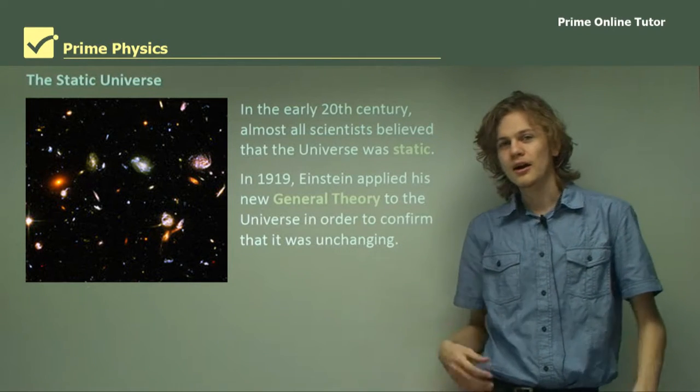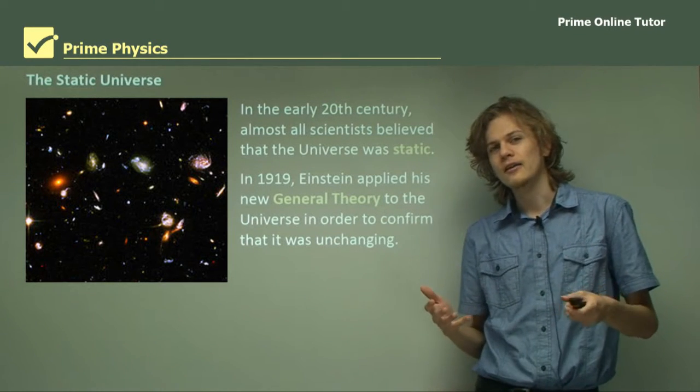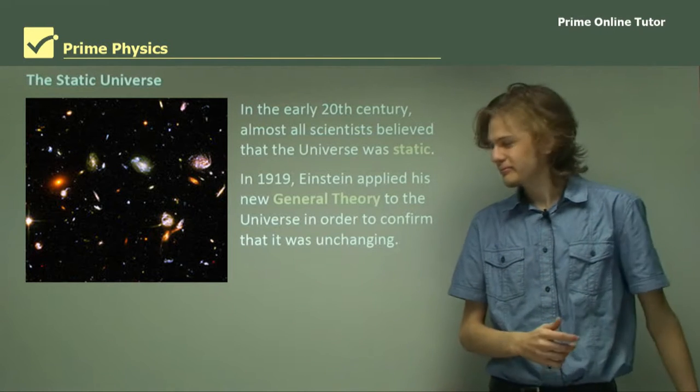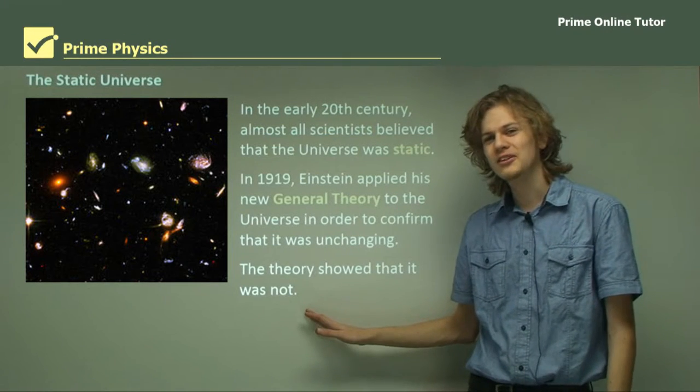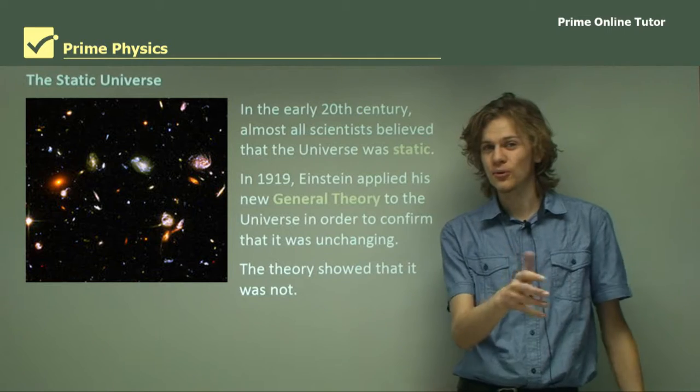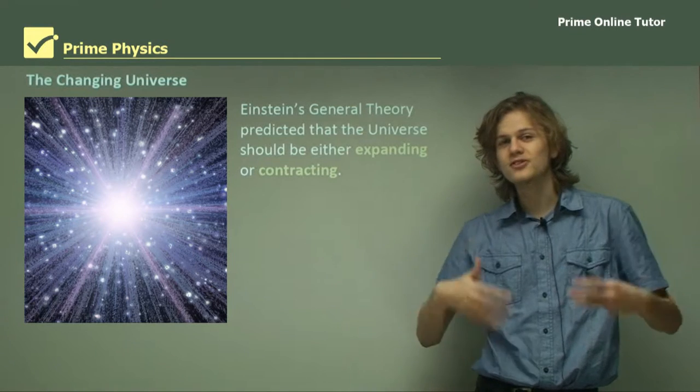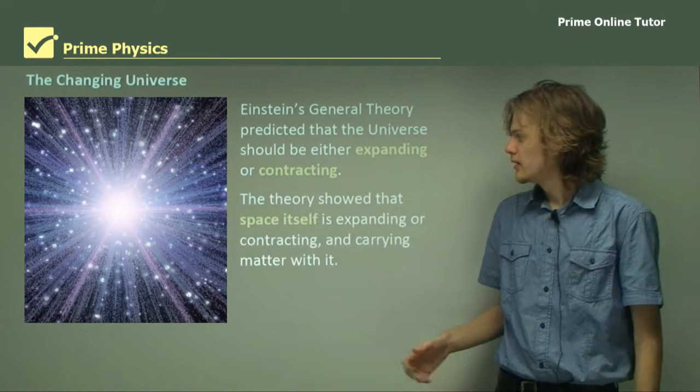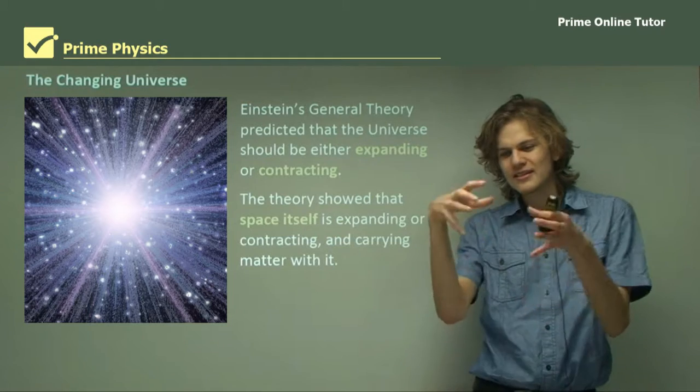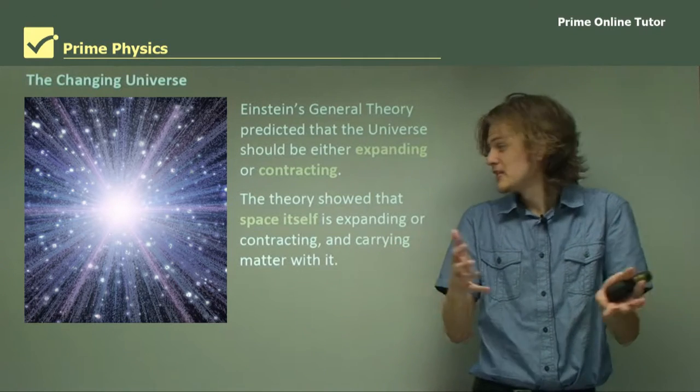In 1919, Einstein decided to prove this. He took his general theory and decided to apply it to the observable universe because he figured that his general theory of relativity should tell him that the universe is standing still. But he was wrong. His general theory of relativity in fact showed him that the universe had to be getting bigger or smaller and was not static as he had first thought. Einstein's general theory predicts that the universe should be either expanding or contracting. The theory showed that space itself is what's getting bigger or smaller. It's not just the things inside the universe that are expanding, it's the empty spaces in the universe that are getting bigger, or getting smaller as the case may be.